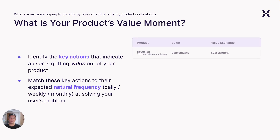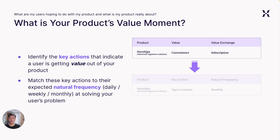Using DocuSign as an example, which offers an electronic signature solution that provides the value of convenience for parties to execute contracts. This value of convenience is not something that is really measurable or even quantifiable to be a good metric. As such, a product manager at DocuSign would need to identify the key actions that would indicate users are getting value of convenience. This key action would be signing a contract. Every time a user does this action on DocuSign, they're experiencing the value of convenience in executing contracts with another party.